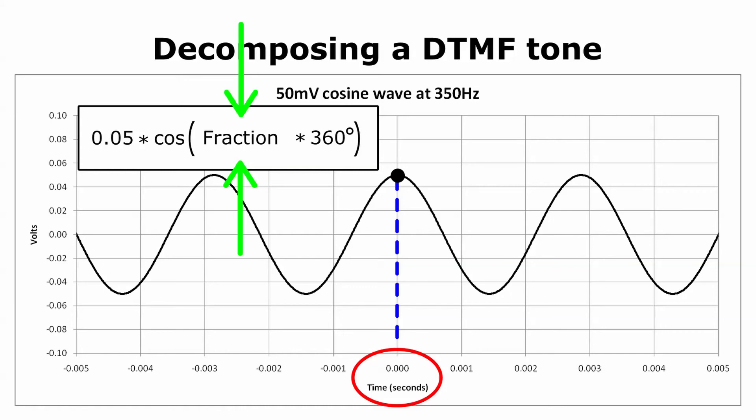We want the fraction to be equal to zero here. Zero multiplied by 360 degrees is zero degrees, and the cosine function at zero degrees has the value of 1. The black dot represents the value at time zero. This suggests that we should set the fraction equal to time multiplied by some other fraction, g. When time is zero, we will be at the black dot. When time increases from zero, we will move to the right on the graph. On the other hand, when time decreases below zero, we will move to the left.